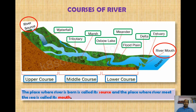What does the word 'courses of river' mean? It means the path through which a river is flowing from its source to its mouth. The place where a river is born is called its source, and the place where a river meets the sea is called its mouth.